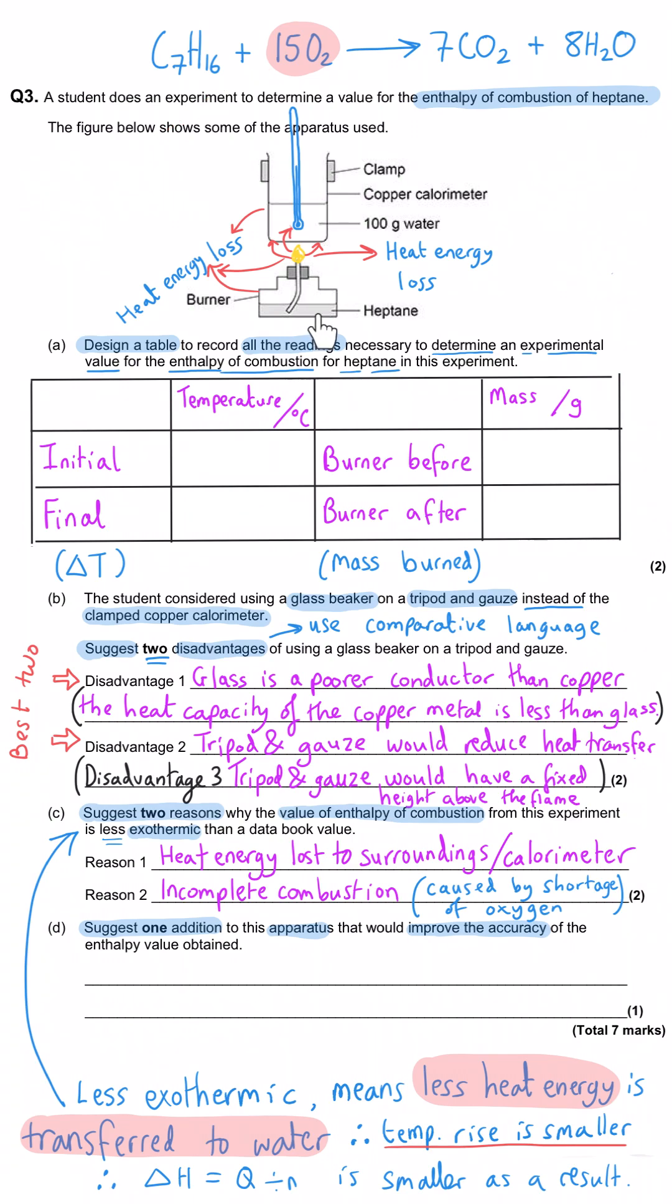We've got the fuel that is burning and what we calculate from that remember is the mass change of the burner. That's already going to be quite accurate. Not much will go wrong with the actual burner itself. And so the biggest sources of inaccuracy come from the water and what it is contained in. And so that means that what we're really focusing on is how can we reduce heat loss from this apparatus setup.